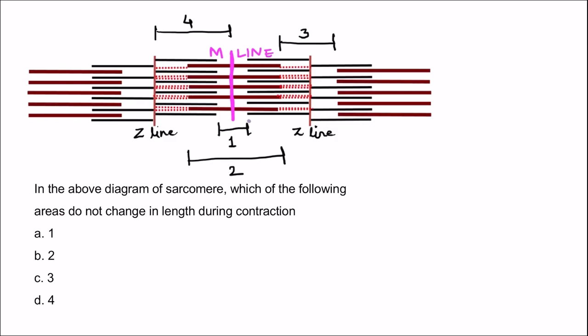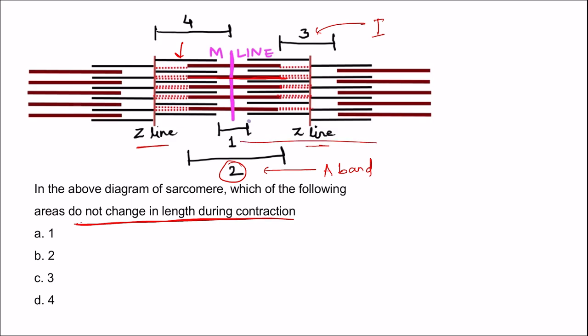Here there is a diagram of the sarcomere asking which areas do not change in length during contraction. This schematic shows Z lines, brown thick filaments, and black thin filaments. Area three represents the non-overlapped region of actin — that is the I band. Area two is the A band because it consists of the full thick filament. Area one, the central non-overlapped region of the thick filament, is the H band. Area four has no defined zone.